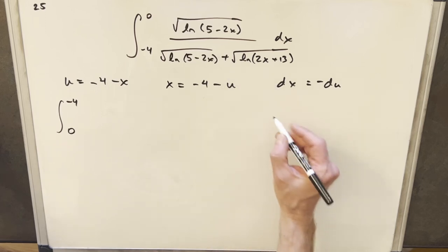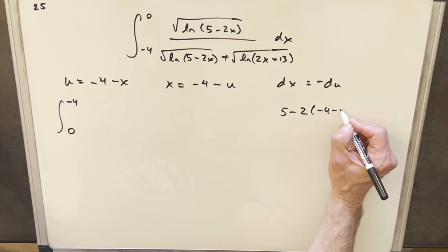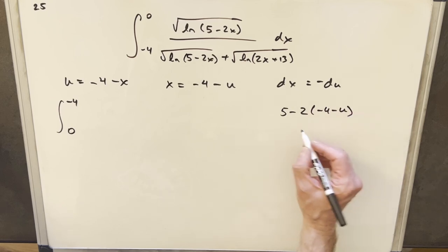And that's, I think what I'll do, let's just look at a couple values. So like 5 minus 2x, if we plug in this in here, minus 4 minus u, what are we going to get? We're going to have 5 plus 8 is 13.